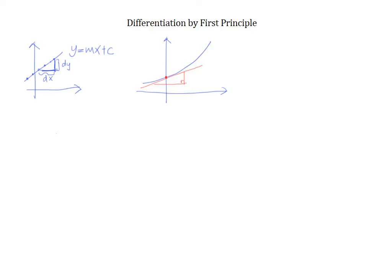On the other hand, if I want to find the gradient at a different point — say the green point instead of the red point — I have to draw another tangent at that point. As we can see, this green tangent is definitely more steep than the red tangent, and therefore we expect a bigger gradient value because we have a bigger rise over the same run. This tells us that at every point on the curve, you have a different tangent and therefore a different gradient. So the gradient of a curve is not constant, unlike a straight line. The question now is: how do we find the gradient of a curve?